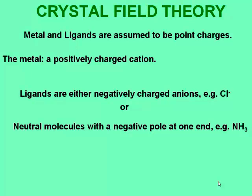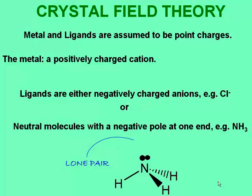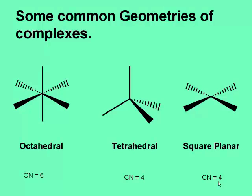For example, ammonia is a neutral molecule, but there is a lone pair of electrons on a nitrogen atom. This lone pair makes that end of the molecule delta negative, so it would be attracted to a positive metal cation.